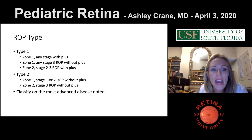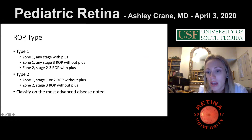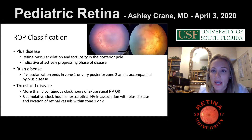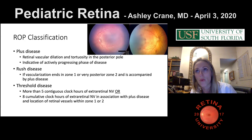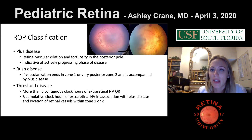A question arose about plus disease including poor pupil dilation and vitreous haze. It pretty much just boils down to the vessels. There are a lot of things that can go with active and advancing disease, but per the definition it's mostly the vessels we're looking at.